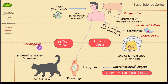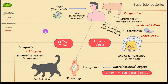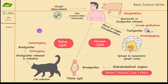In the cat's intestine, bradyzoites are released and then multiply in large numbers by the process of schizogony — asexual reproduction producing multiple bradyzoites. Then the bradyzoites undergo gametogony. If you have seen my previous videos on Plasmodium, you will be familiar with this process.